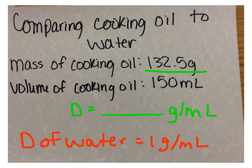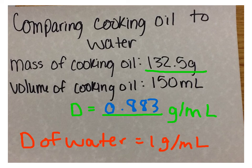I am now going to compare the density of cooking oil to the density of water. Remember, the density of water is 1 gram per milliliter. The mass of cooking oil is 132.5 grams. The volume of the cooking oil is 150 milliliters. When I divide these, I get the density to be 0.883 grams per milliliter for the cooking oil. Therefore, water is more dense than cooking oil, which explains why cooking oil will float on water.